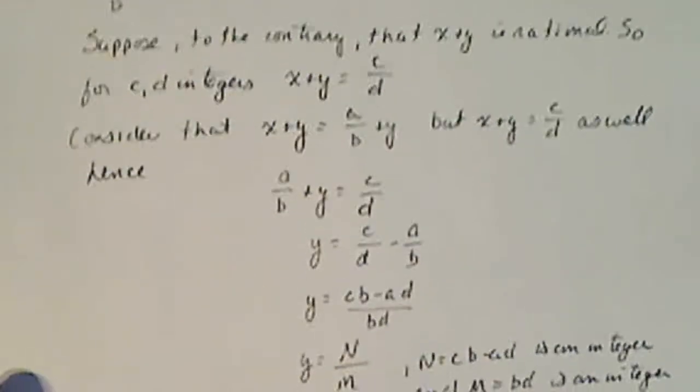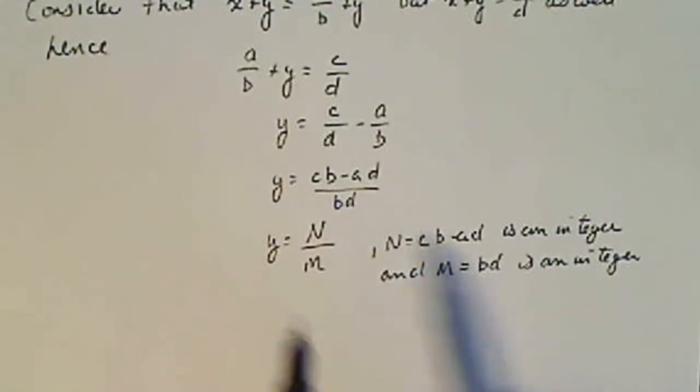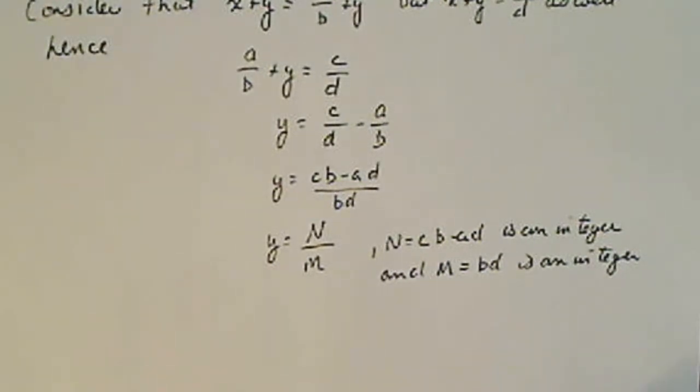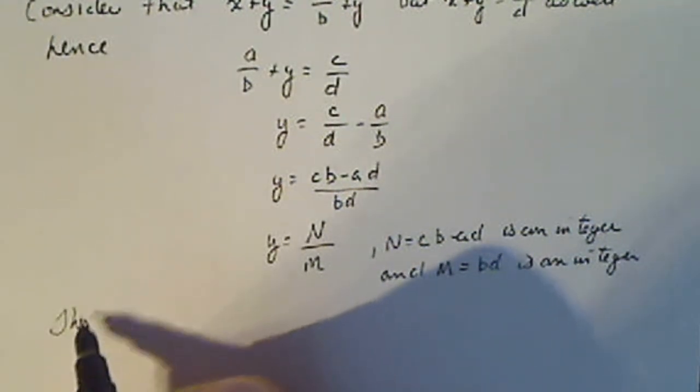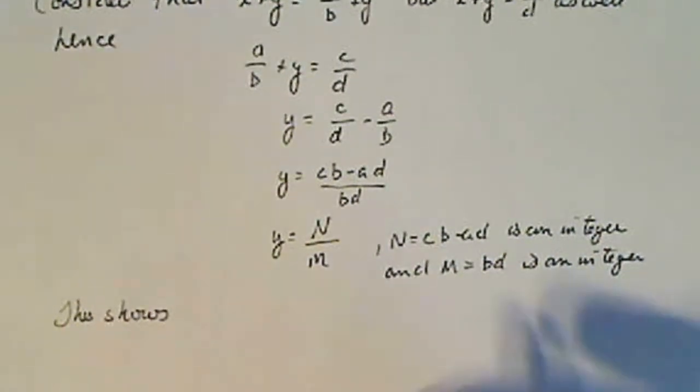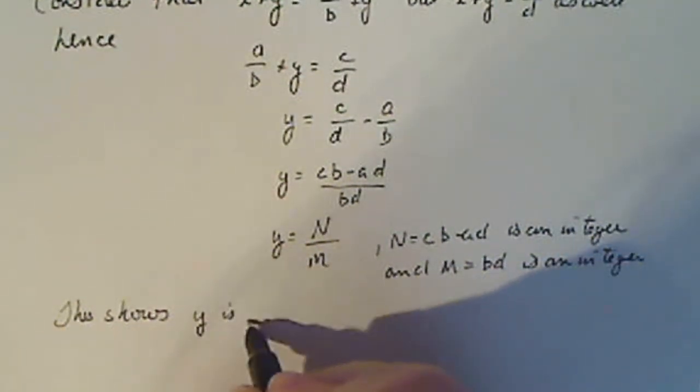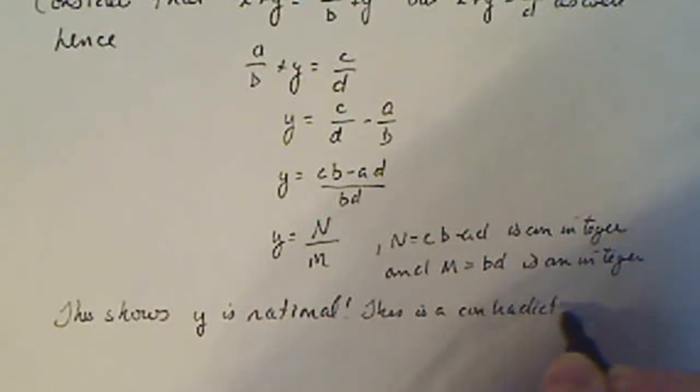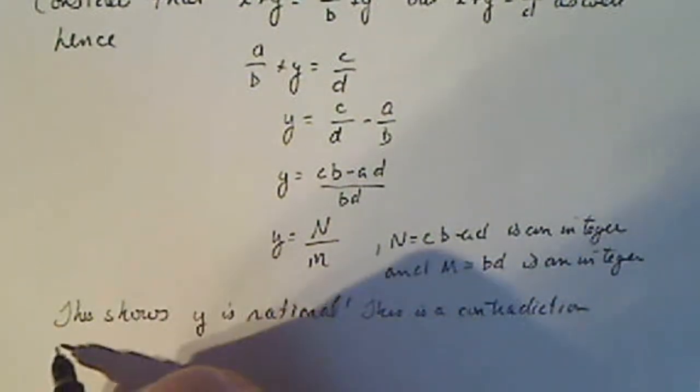So what do we have right here? Sorry that was out of the picture here. So we have N over M, where N is CB minus AD, that's an integer, and M equals BD, which is also an integer. So Y can be written as a ratio of what, two integers. This shows, what does this show? So this shows Y is rational, right, an integer over an integer. This is a contradiction to our original statement.